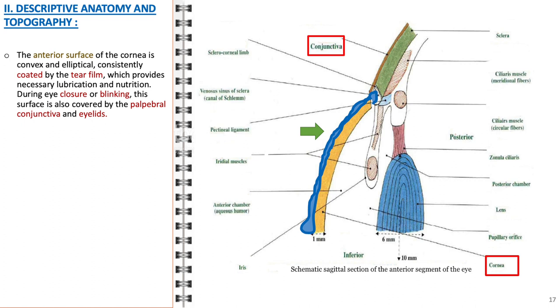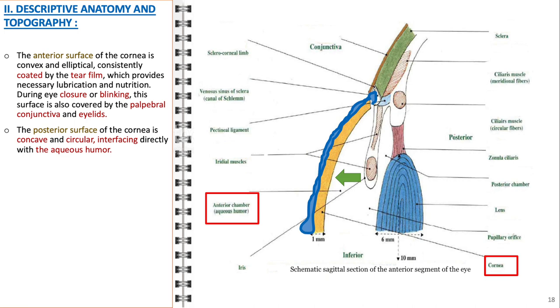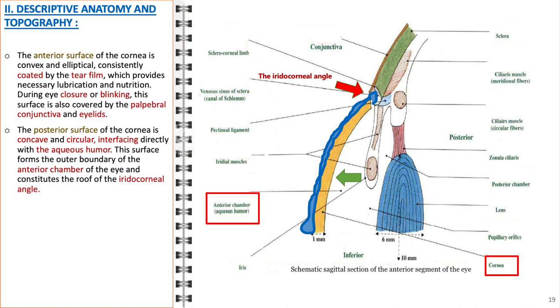In contrast, the posterior surface of the cornea is concave and circular, and it lies in direct contact with the aqueous humor. This positioning is strategic as the posterior surface forms the outer boundary of the anterior chamber of the eye. Additionally, it serves as the roof of the iridocorneal angle, a key structure in the drainage of aqueous humor and the regulation of intraocular pressure.